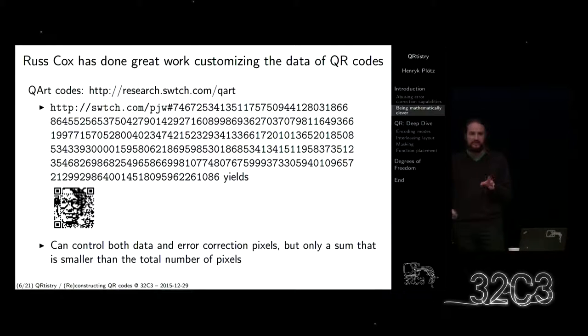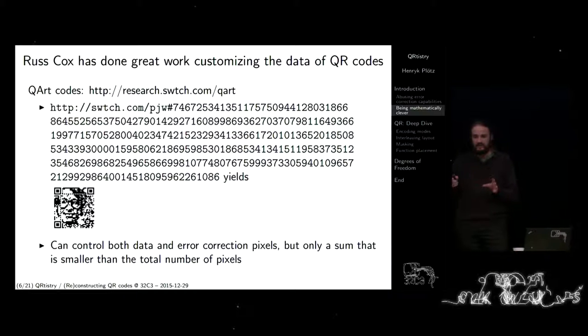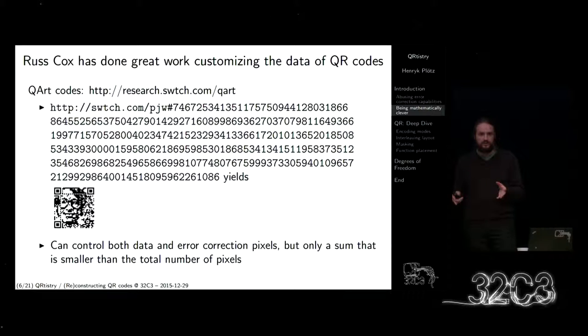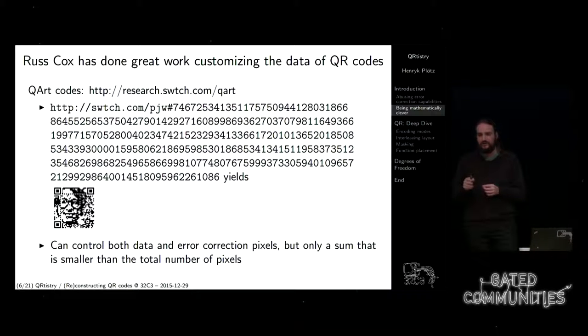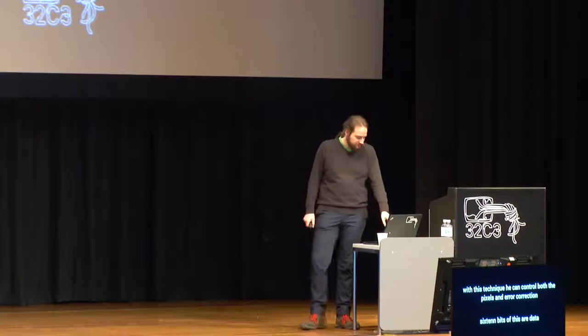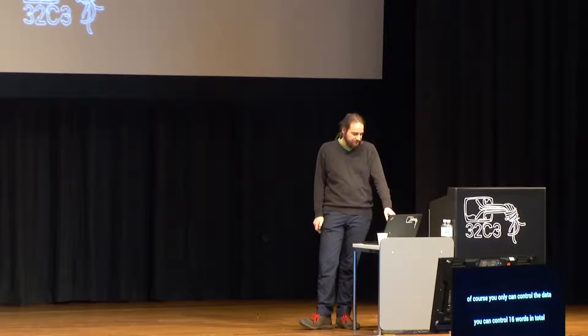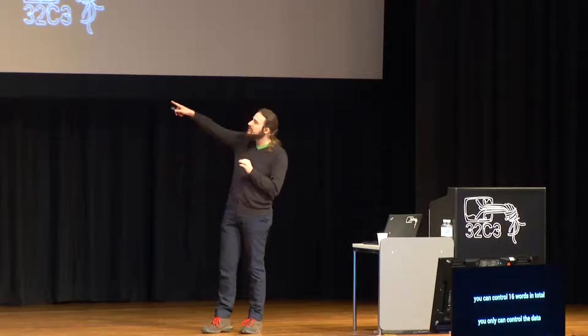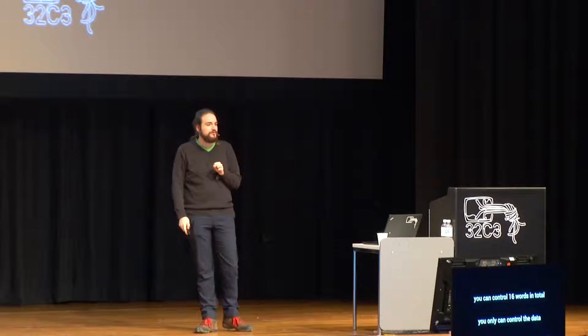Mit dieser Technik kann man bis zu 16 Bits kontrollieren — diese Daten sind eigentlich Daten und der Rest ist Fehlerkorrektur. Höchstens kann man also 16 Wörter kontrollieren, also 10 Daten und 6 Fehlerkorrektur. Das war jetzt die Einführung und ein bisschen Motivation, warum ich gerne mehr als das modifizieren möchte. Wir sehen, dass es noch recht viel Struktur gibt, die wir nicht kontrollieren können.